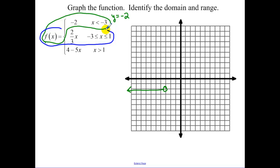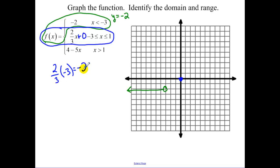The middle function has a slope of 2 thirds and a y-intercept of 0. To find the starting point, plug in negative 3: we get negative 2. It's convenient that the top and middle functions start and end at the same point, so the hole gets filled in. Then I go up 2 thirds and stop at positive 1.